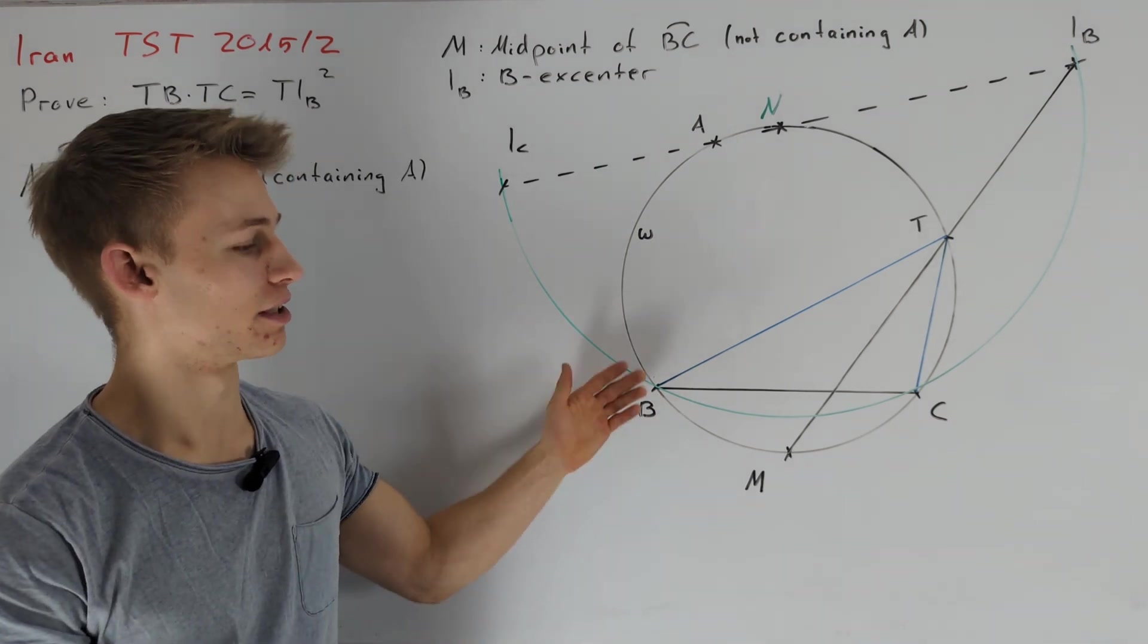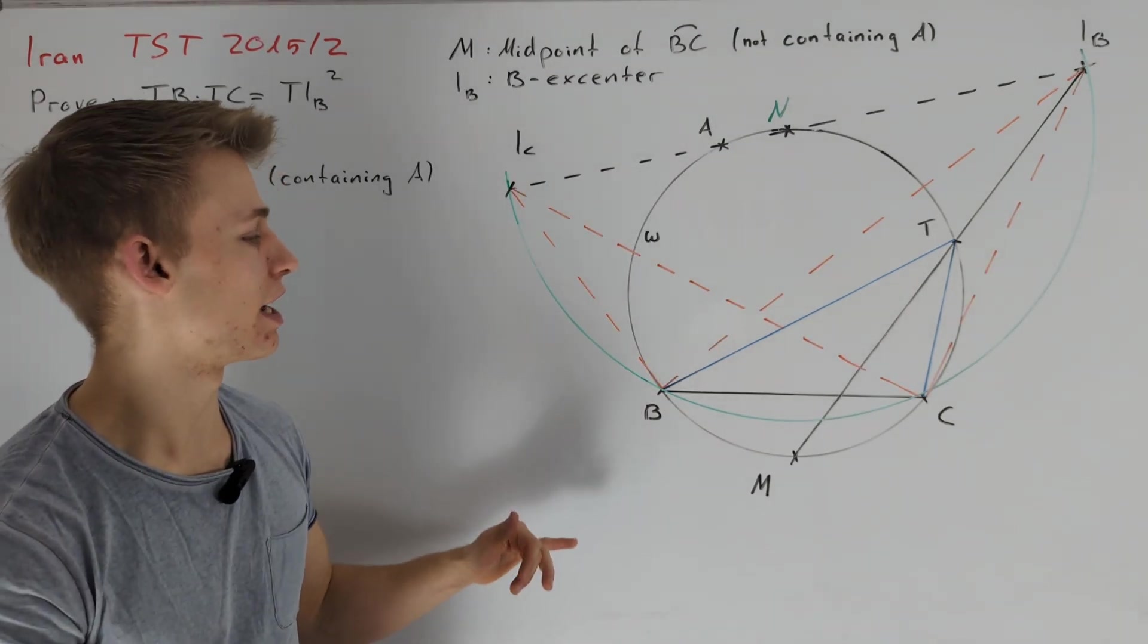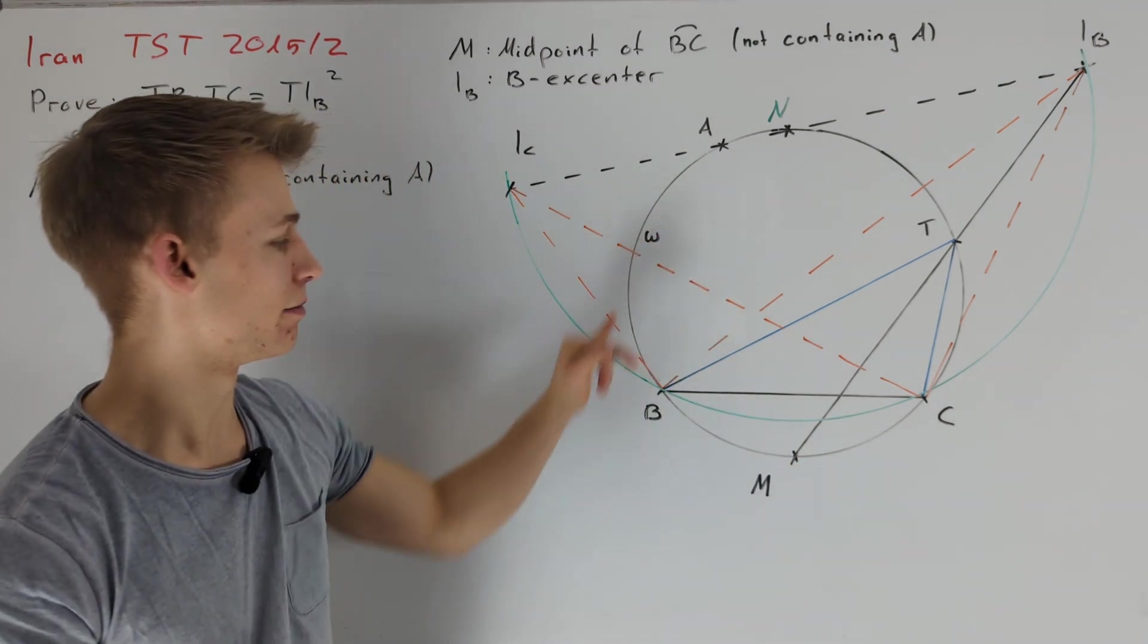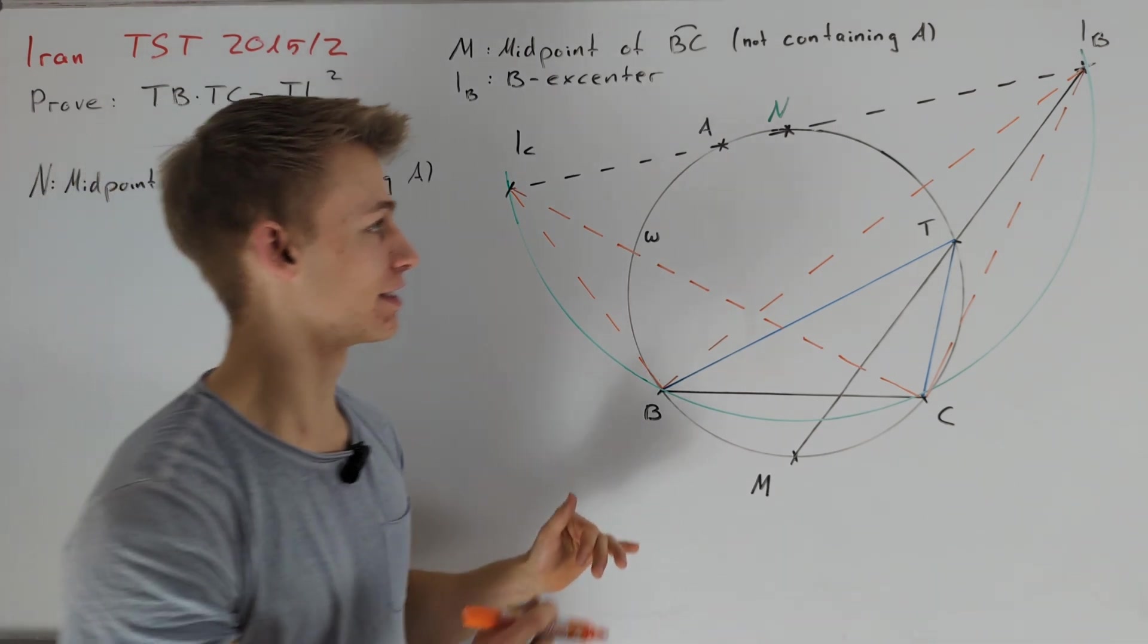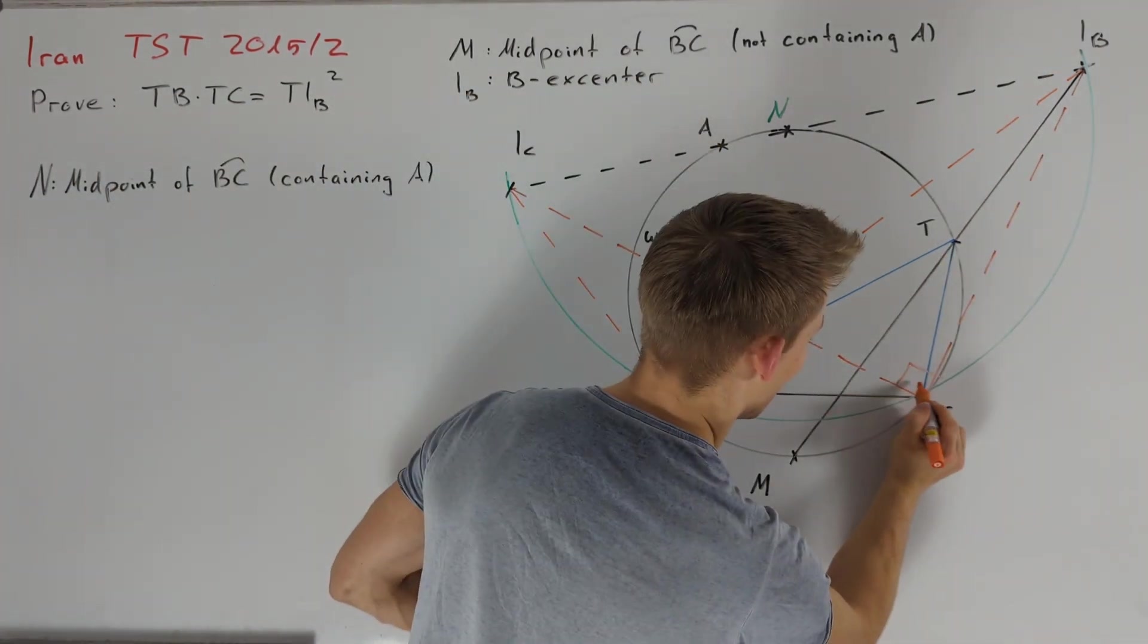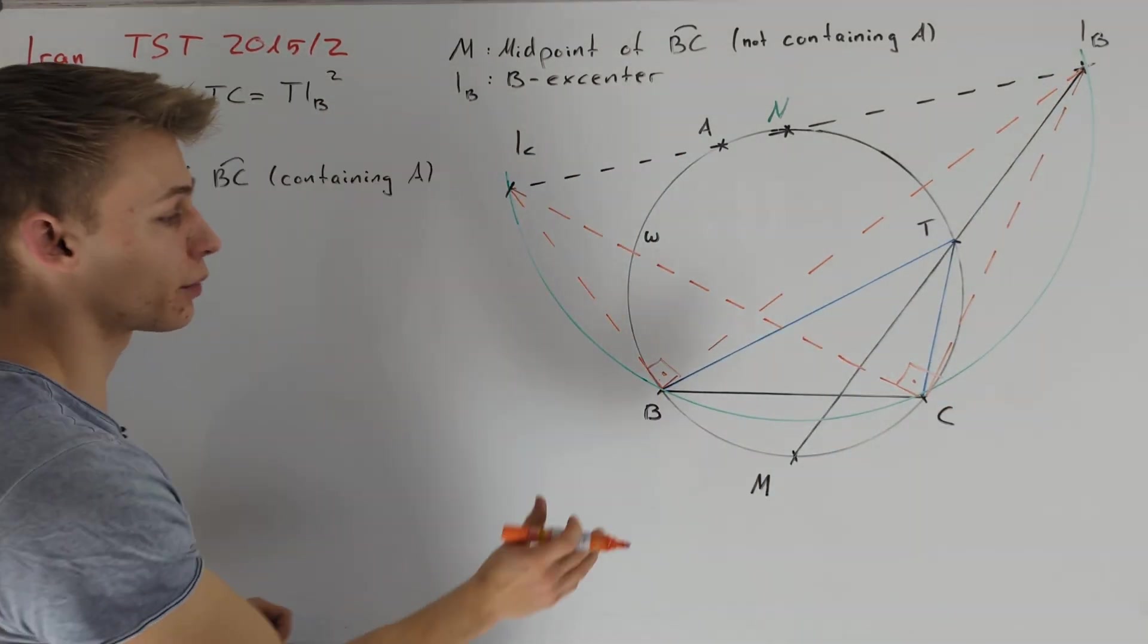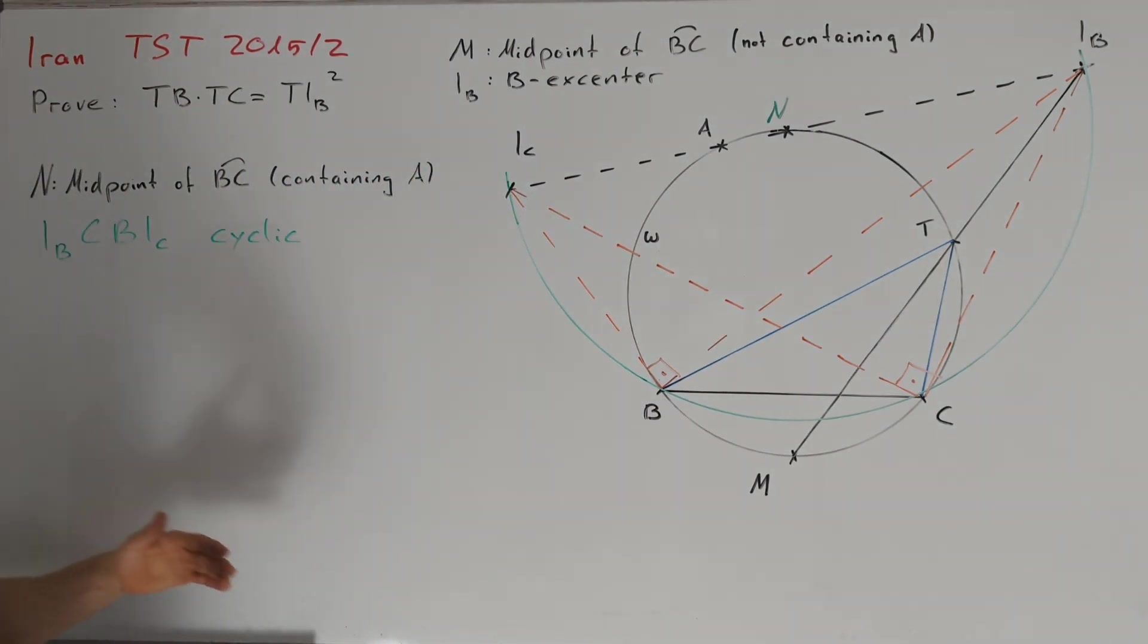And to do this, let's draw in some more lines. The orange lines are the interior and exterior angle bisectors of the angles by B and C in triangle ABC. They directly give us two right angles, namely angle IB C IC and angle IB B IC. Thus, we indeed see that IB, C, B and IC are cyclic. Moreover, we know that the midpoint of this circle lies on line IC IB, which is the exterior angle bisector of angle BAC.